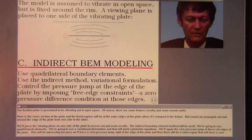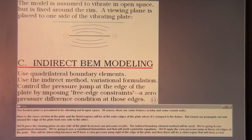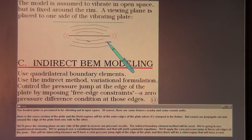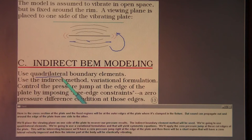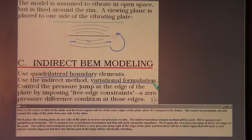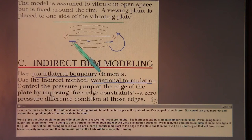Our beaded plate is presumed to be vibrating out in open space. The fixed regions will be at the outer edges of the plate where it's clamped in the fixture, but sound can propagate out around the edge of the plate from one side to the other. We'll place a viewing plane on one side of the plate to recover our pressure results. The indirect boundary element method will be used with quadrilateral elements and a variational formulation, which will yield symmetric matrices. We'll apply the zero pressure jump at these cut edges of the plate, with a zero lateral velocity imposed in the clamped region and the interior part of the body elastically vibrating.